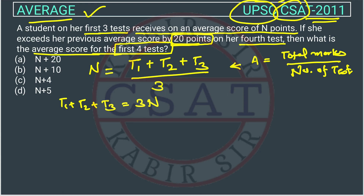In the fourth paper, she received 20 marks more than the average score of the previous tests. The average marks of the previous tests are n, so in the fourth paper she is getting n + 20 points.